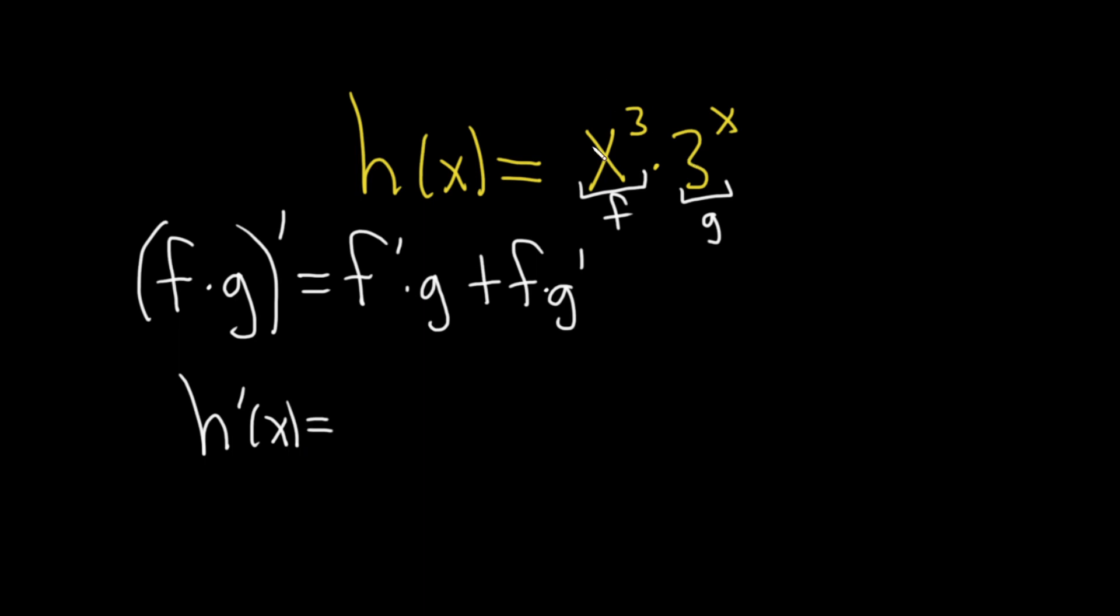So first we take the derivative of the first. So for the derivative of x cubed, we simply use the power rule. We bring down 3 and put it in the front. So 3x, and then you subtract 1 from the exponent. 3 minus 1 is 2. So 3x squared. This is the derivative of the first function, times the second one, 3 to the x.